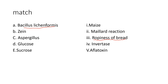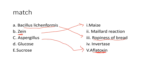Next is Zein — not Zayn Malik! Zein is a protein present in maize (corn), making up about 80% of the protein storage in maize. You should also know that aflatoxin is a toxin produced by Aspergillus species, which is a fungus.